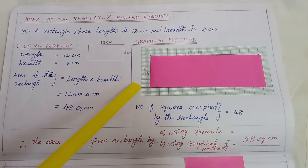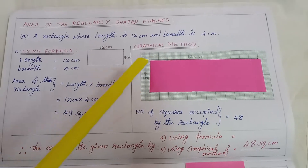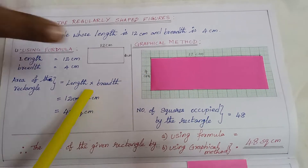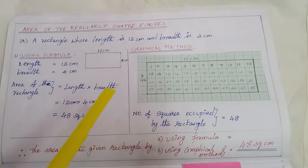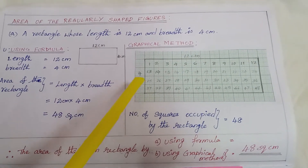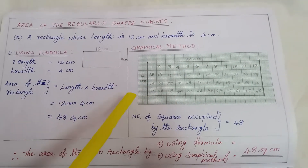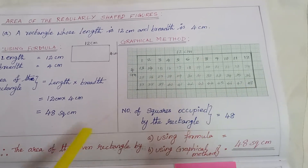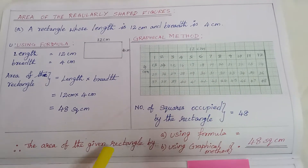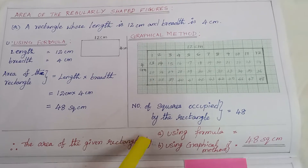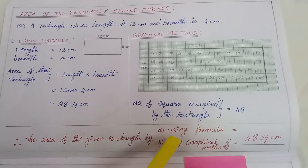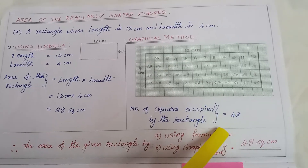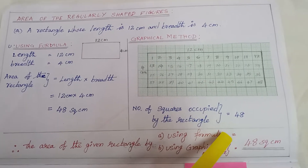Now, in the graphical method, after removing the colour paper, the number of squares occupied by the rectangle is 48. Therefore, the area of the rectangle by using formula and by using graphical method, we got 48 square cm.